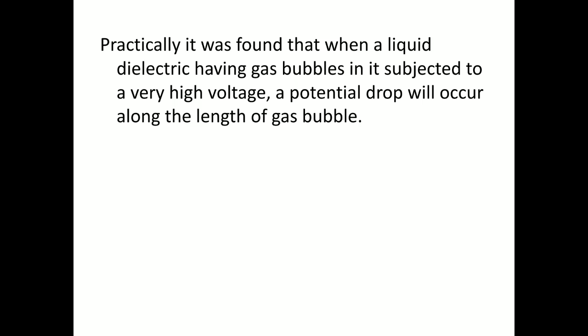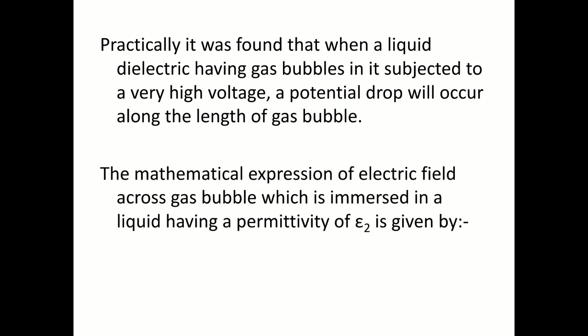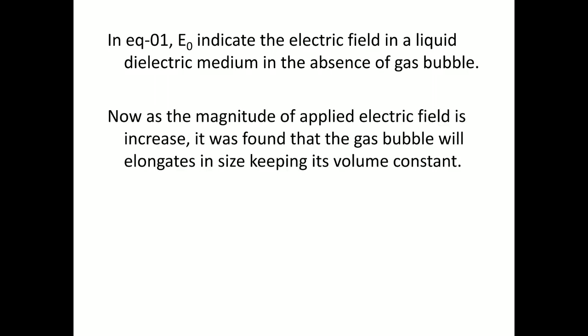Practically, it was found that when a liquid dielectric media having some gas bubble or air cavity is subjected to a very high electric potential, there is a potential drop that occurs along the length of that particular gas bubble. If you are interested to calculate the mathematical expression of the electric field across that gas bubble, it can be represented by equation number one, where epsilon 2 indicates the permittivity of the liquid dielectric medium and E₀ indicates the electric field applied across the liquid in the absence of the gas bubble. As the magnitude of the applied electric field is increased, the gas bubble will try to elongate along its length keeping the overall volume constant — this is one of the most important phenomena occurring here.